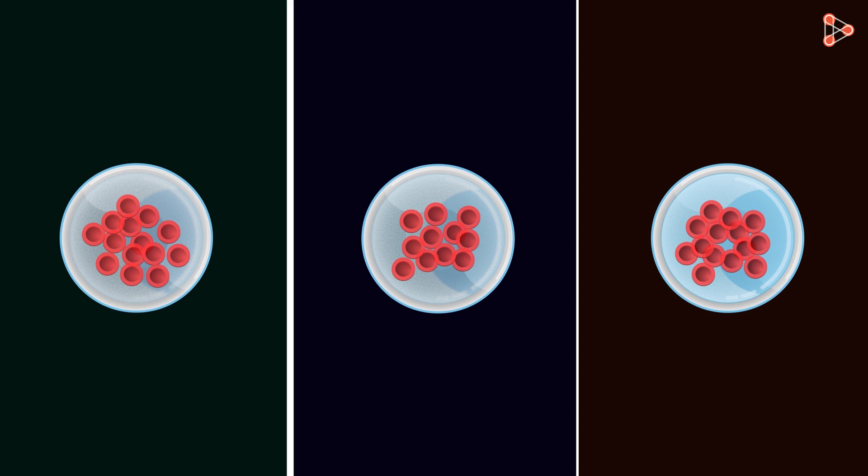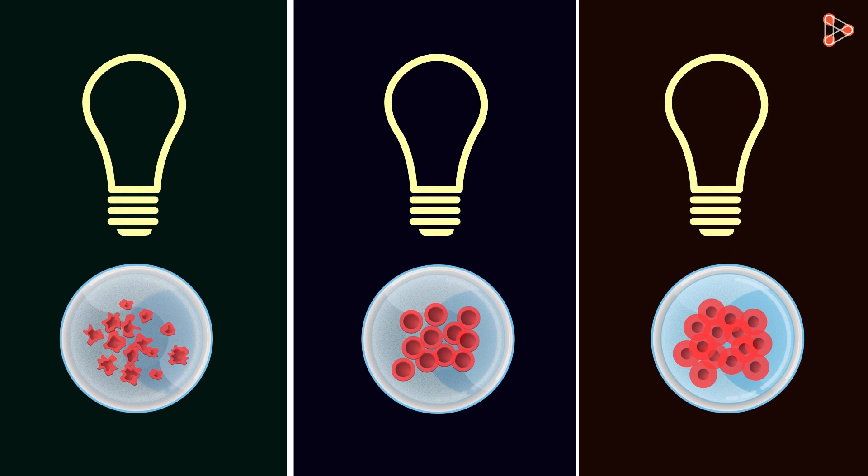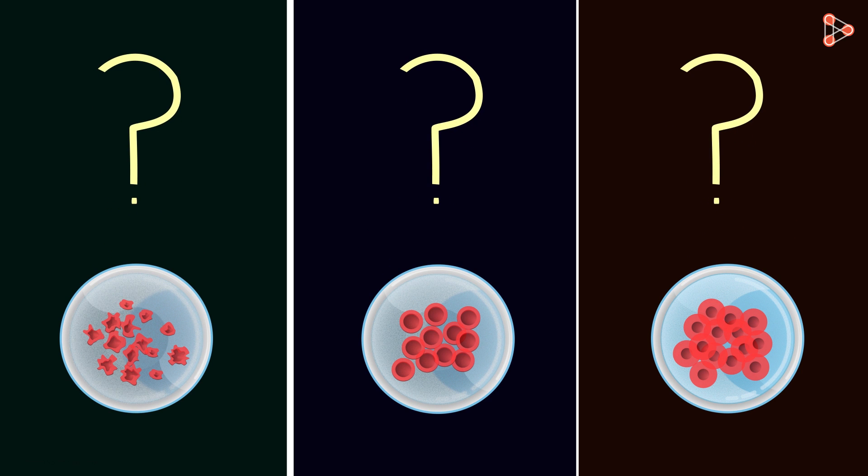After a while, we notice that the first set has cells which are shrinked. The second set has cells that are just the same, while the third set has cells which are swollen or bulged. Any idea why this happened? Let's understand this.